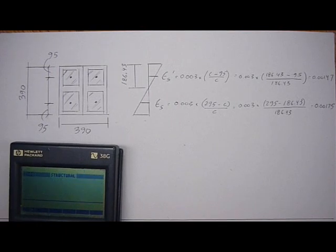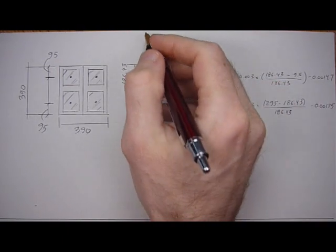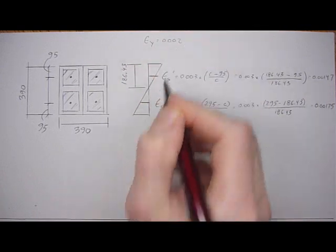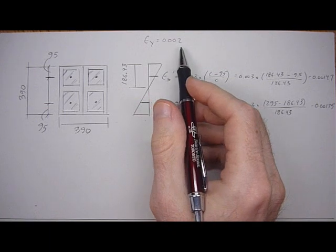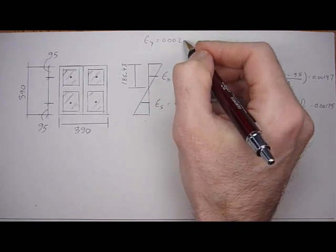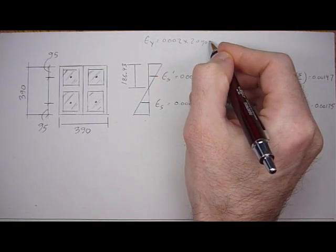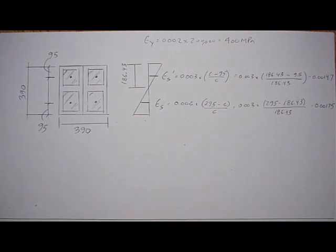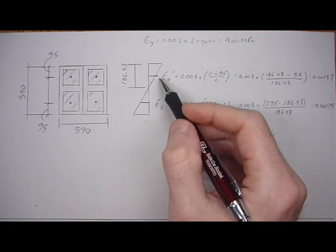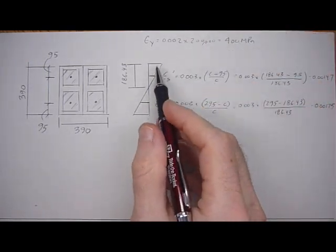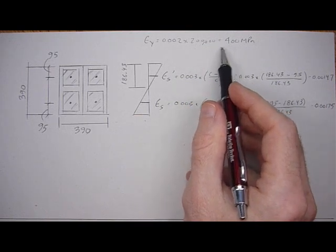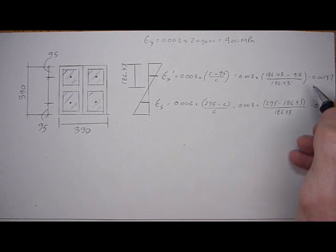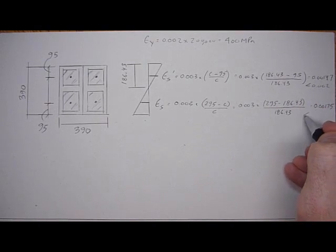So in both cases, the strain is below 0.002. The yield strain is 0.002, and anything above or at 0.002 would have a stress of 400 MPa. But if it's below 0.002, then it's a linear elastic stress distribution. Once you get to 400 MPa, it caps off and can't go any higher. We were correct in our assumption because these are both less than 0.002.